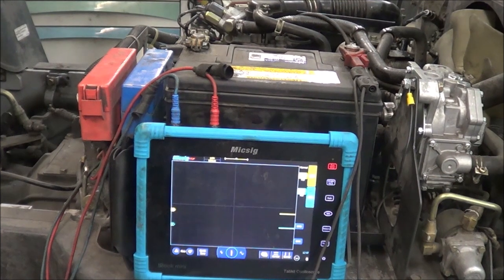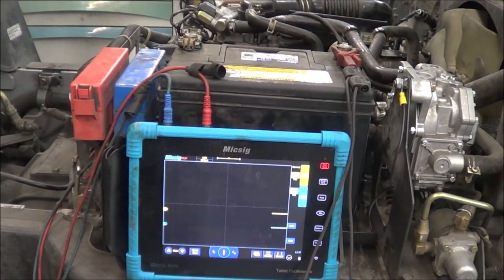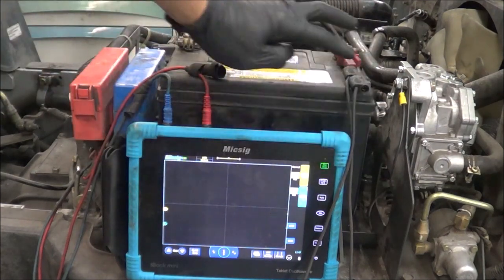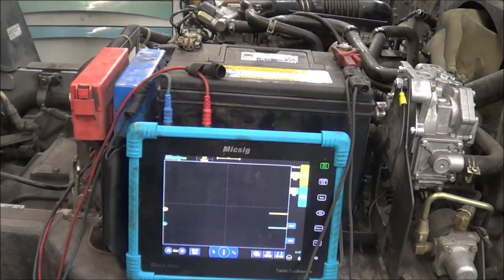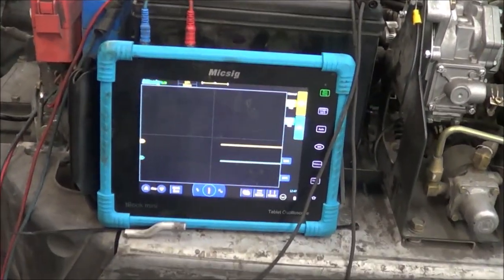All right, so we put it all back together, replace the tensioner. I already have my oscilloscope hooked up to the cam and crank sensor signal, so I'm going to zoom you in on the oscilloscope when I crank it.